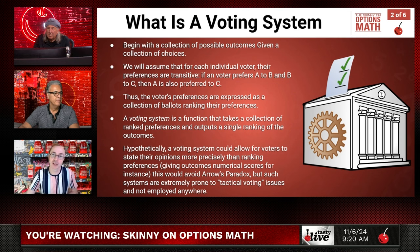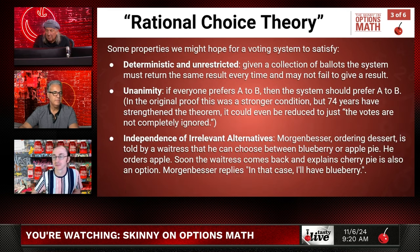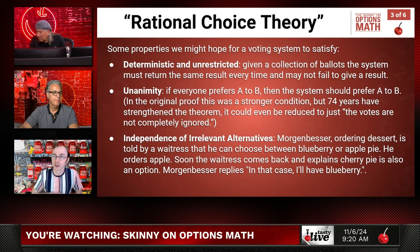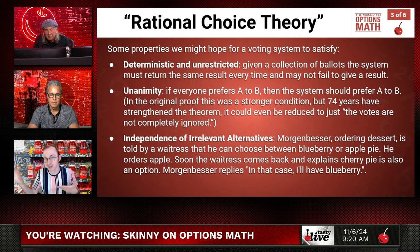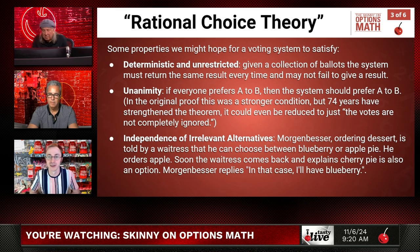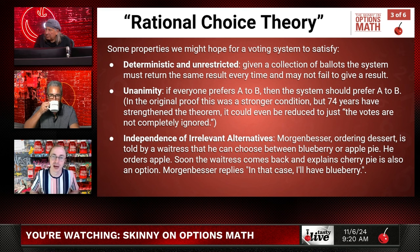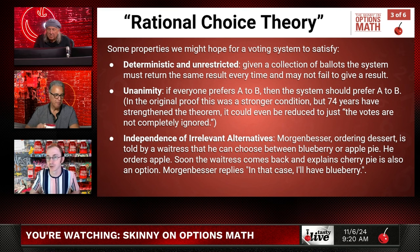So we stick with systems where everyone is only allowed to state their preferences, not how strongly they feel. You can say between any two things which you prefer, and you're required to have transitivity. That makes a voting system: anything that takes in a collection of ballots and outputs a singular result. Let's look at what properties we might want a voting system to have.